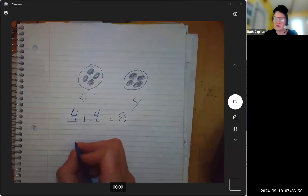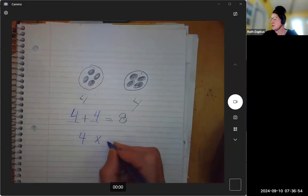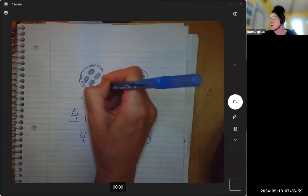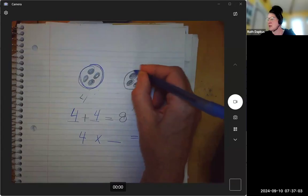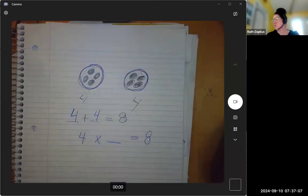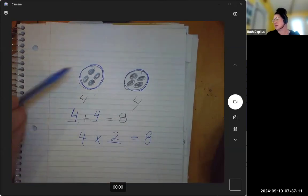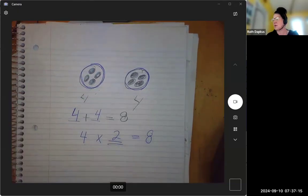Or if we wrote a multiplication sentence, we could write four times how many groups? Well, there's one pizza with four groups of pepperoni and there's another pizza with four groups, so it would be four times two, right? Four—how many there are inside—times two—how many groups.